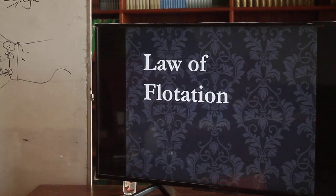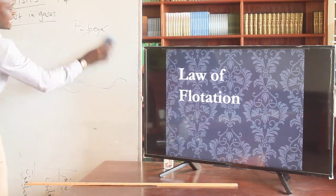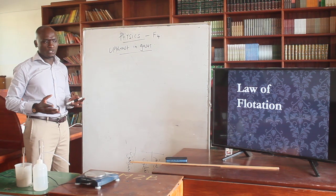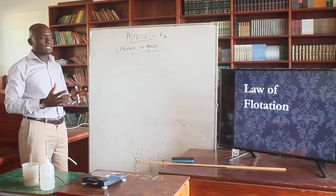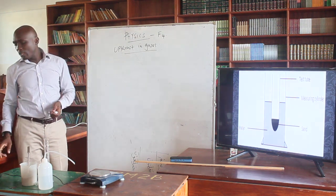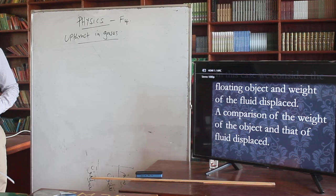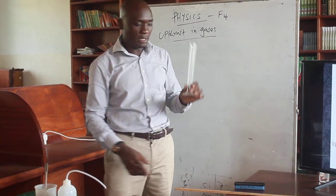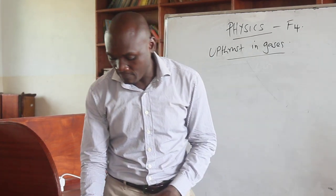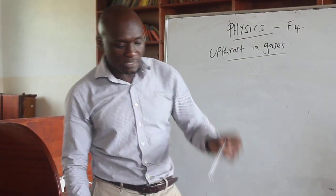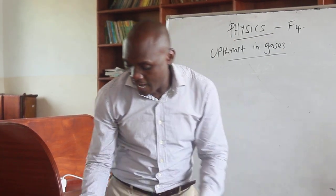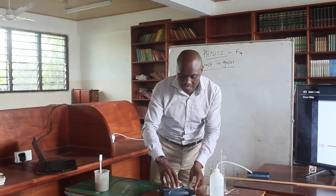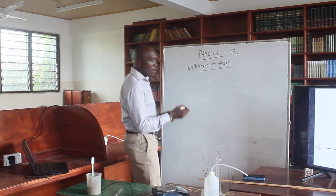Moving forward, we go to what we call the law of floatation. We saw a ferry floating and moving on water in the ocean, carrying very heavy loads, yet able to float. We are going to describe a simple experiment. The apparatus I have here: a measuring cylinder — 100 ml, which is equivalent to 100 cubic centimeters; a test tube; water; small sand; a spatula; and a pan balance for measuring mass, which can be converted into weight.